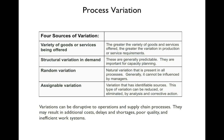Third, random variation — natural variation you can't manage or predict; sometimes a bunch of people just show up. Fourth, assignable variation, which has identifiable sources and can be reduced or eliminated through analysis and corrective action. For example, if a cook always has to walk to a distant refrigerator to get lettuce for a salad, adding a small refrigerator near the prep area eliminates that variation. Process variation can cause additional costs, delays, shortages, poor quality, and inefficient work systems.